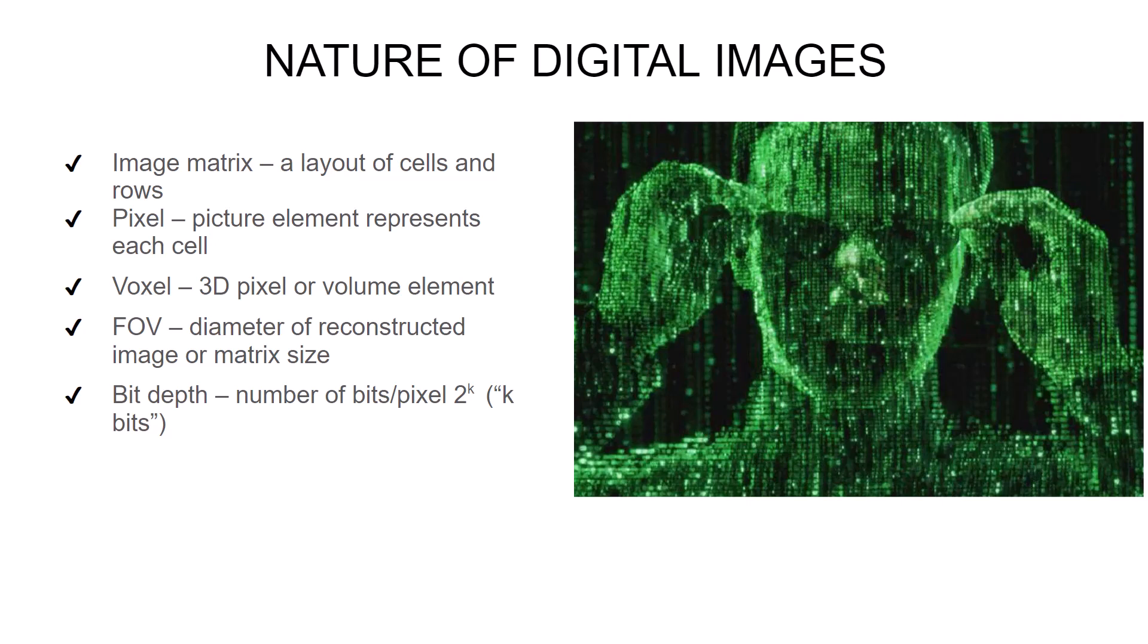Bit depth refers to the number of shades of gray available in a radiographic image. It can be expressed as 2 to the k power. For example, an 8-bit system would allow you to see 2 to the 8th power number of shades of gray, or 256 shades of gray. We'll break down all of these terms more today.